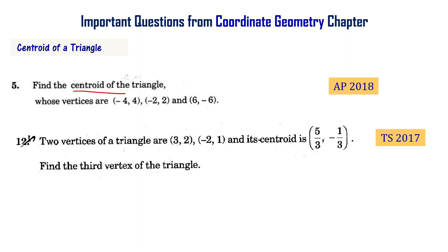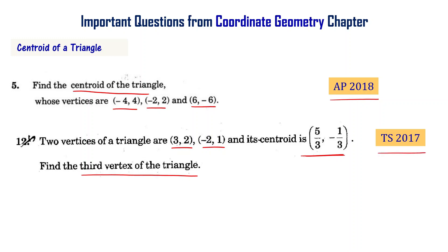Find the centroid of the triangle whose vertices are given. This is an AP final exam 2018 problem. Two vertices of a triangle and the centroid are given, and we are asked to find the third vertex of the triangle. This is a Telangana final exam 2017 problem. Let us solve these two problems now.